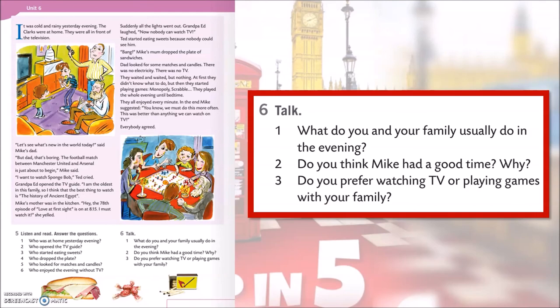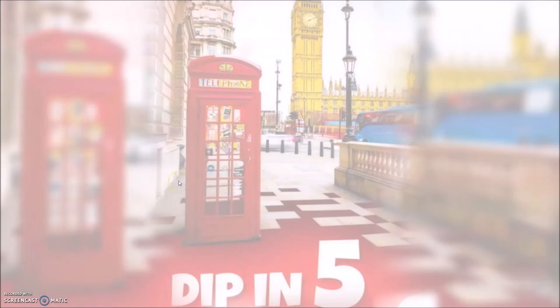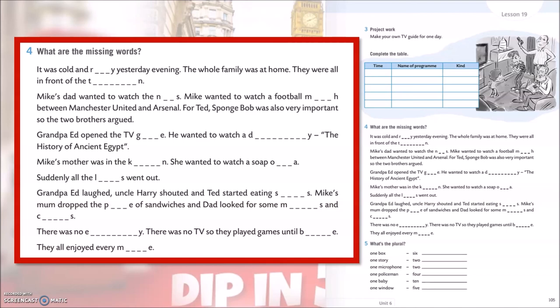We are getting closer to the end of our today's lesson, so it's time for homework. Za domaću zadaću riješi četvrti zadatak na 105. stranici svoje radne bilježnice, pa fotografiranu ili skeniranu domaću zadaću pošalji na dogovoreno virtualno mjesto. Na primjer, it was cold and — riječ počinje sa r, završava na y — to bi bila riječ rainy. It was cold and rainy yesterday evening. Ostatak zadatka vježi za domaću zadaću.